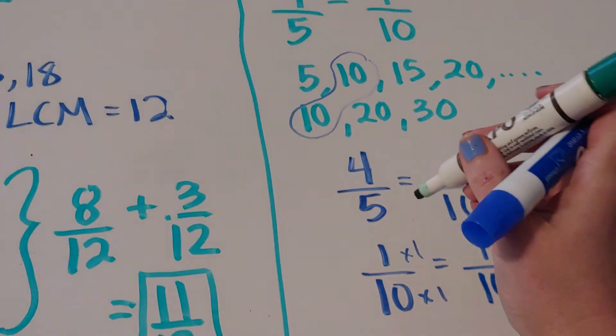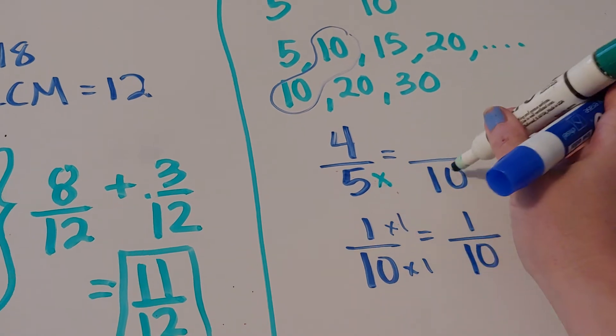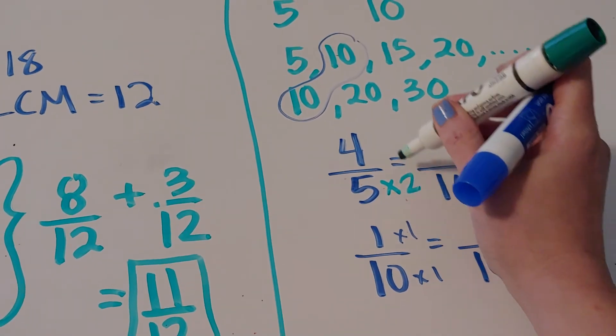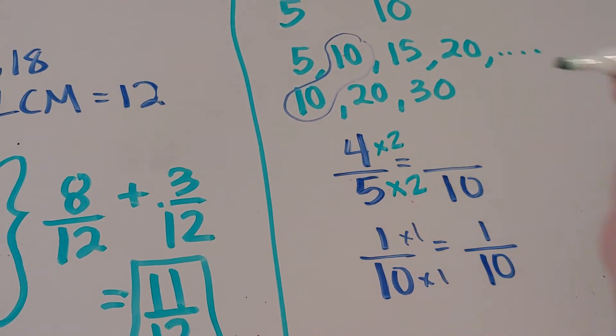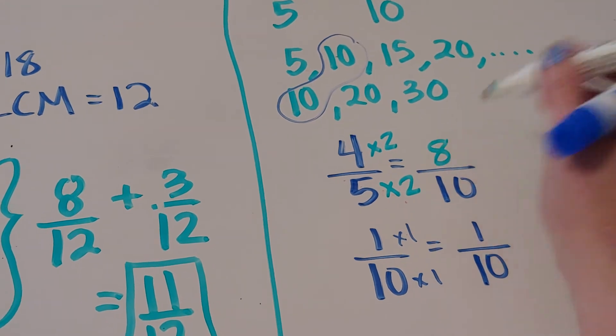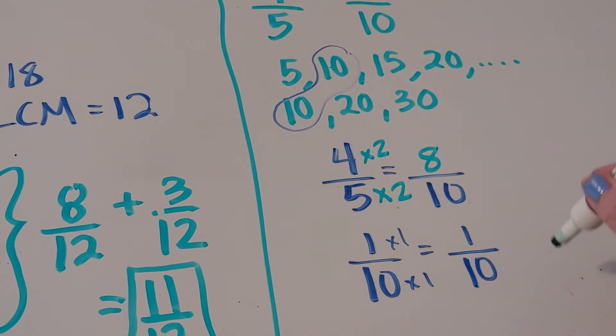So here, I want to take 5 times what gets me to 10. And that answer is 2. So 4 fifths is the same thing as 8 tenths and 1 tenth is 1 tenth.